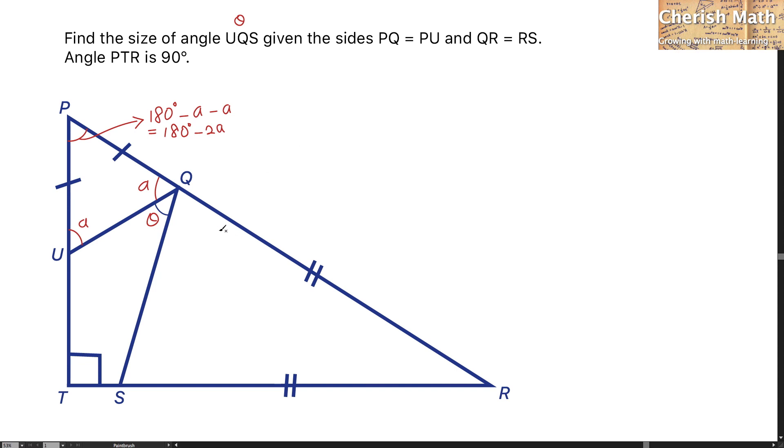By looking at triangle QRS, it is in the form of an isosceles triangle too. If this is angle B, then this part will be angle B as well.